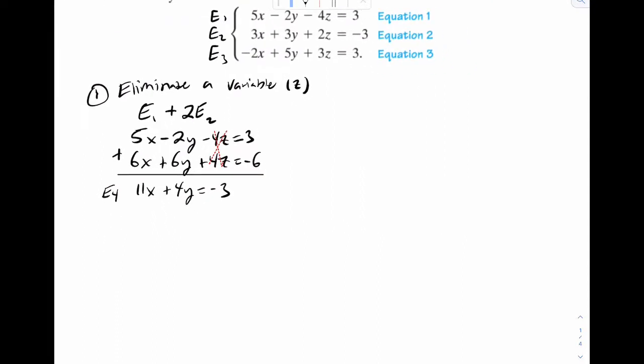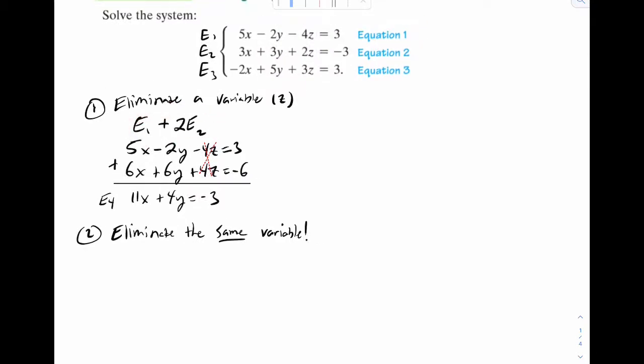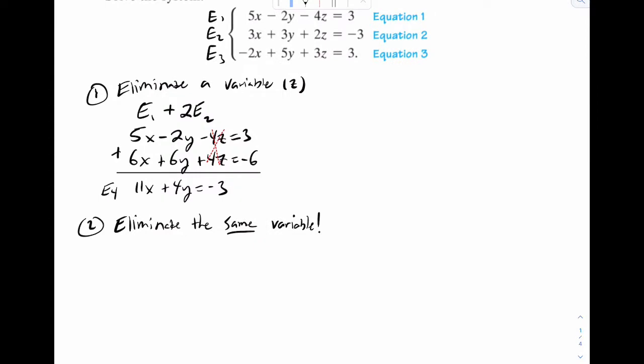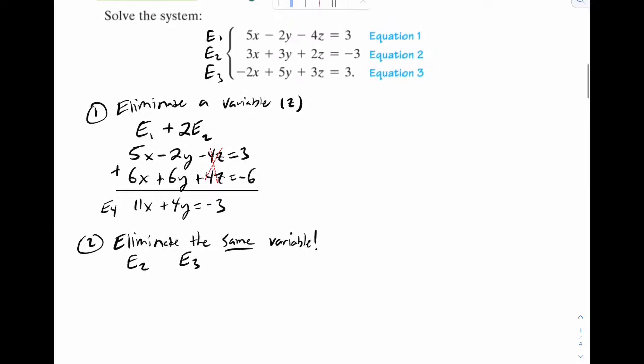Now for step two, what you want to do is eliminate the same variable using two different equations. So I used E1 and E2, which means I can no longer use those together. So instead, I'll use E2 and E3. And I could have used like E1 and E3. I just think E2 and E3 would be a little bit easier. I'm going to write, I'm using E2 and E3. It's a little bit harder. So I see this is two and three. So to get rid of this, I'm going to multiply E2 by three, and I'm going to add it to negative 2E3. So that should make the z's cancel.